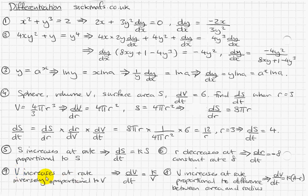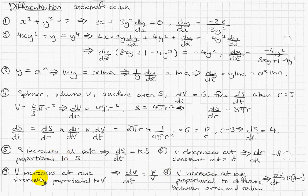Another example: 'V increases at a rate inversely proportional to V.' At a rate means dV/dt. Inversely proportional means k over the variable, which is V, so dV/dt = k/V. Another: 'R decreases at a constant rate of 8.' Decreasing means negative, and it's not proportional to anything — it's just 8. So dr/dt = −8.